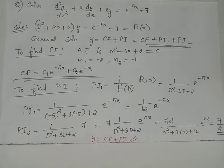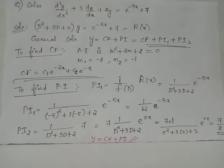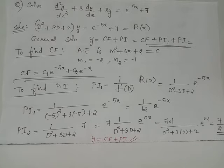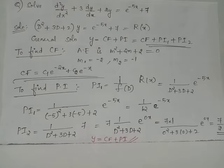To find PI we have two parts: PI1 and PI2. PI1 = [1/f(D)]·e^(-5x), and PI2 = [1/f(D)]·7, which can also be written as 7·[1/f(D)]·e^(0x), since 7 is exactly the same as 7·e^(0x).